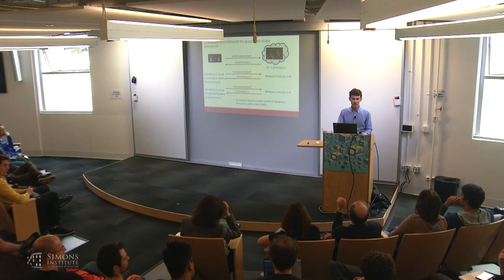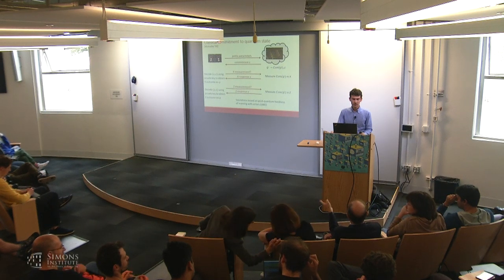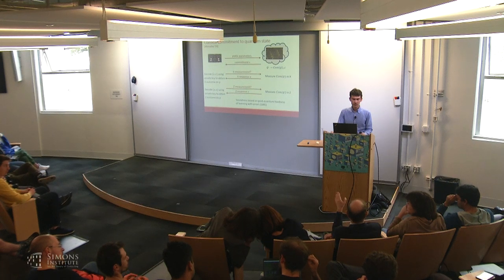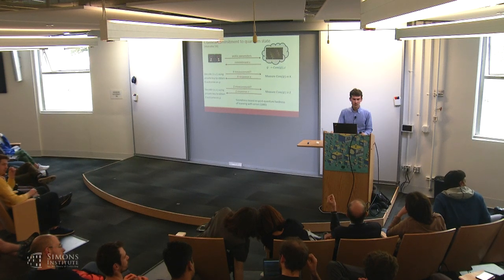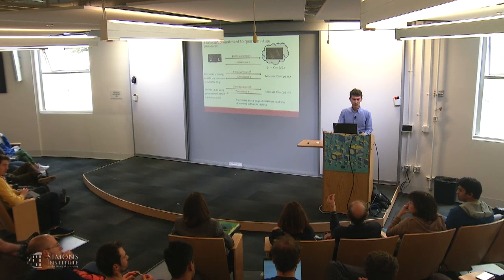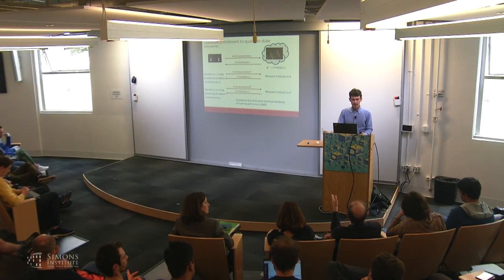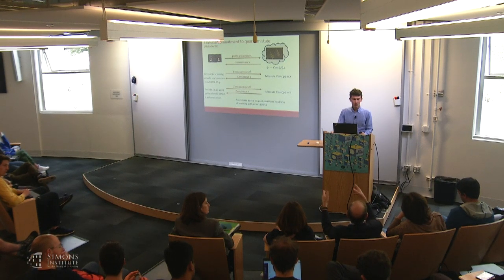But the point is: why can't I, as a malicious verifier, perform a joint measurement on everything you send me and gain some information? So I can, by following these instructions, say I'll do this measurement and return that I've done this measurement and no others. But why can't I — you give me these states and somehow perform a joint measurement on them?